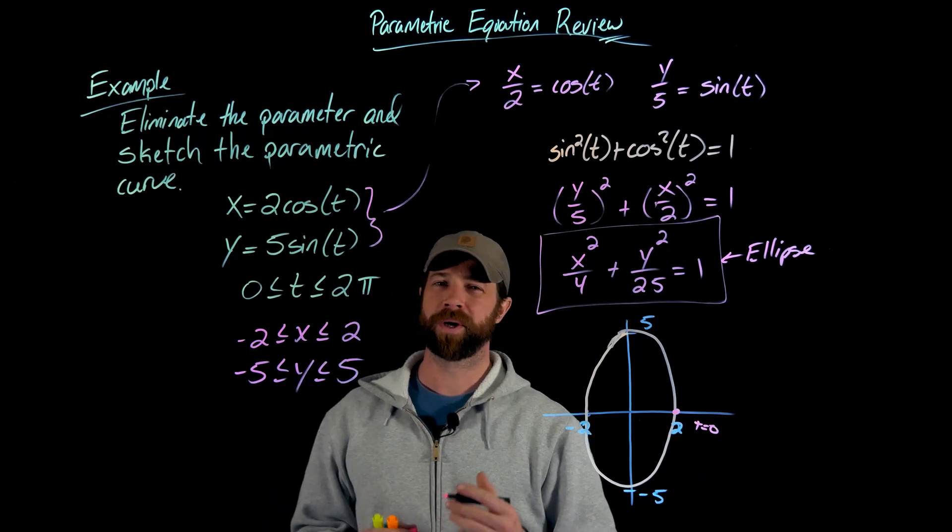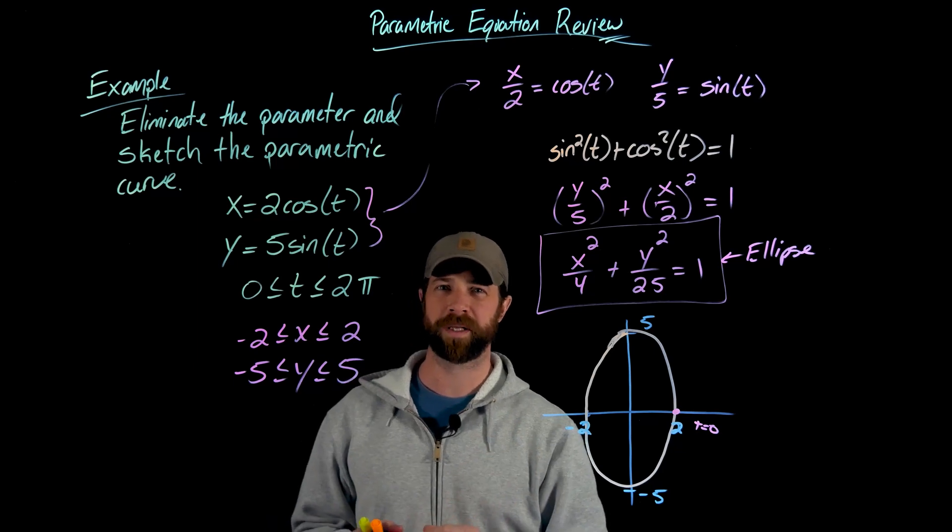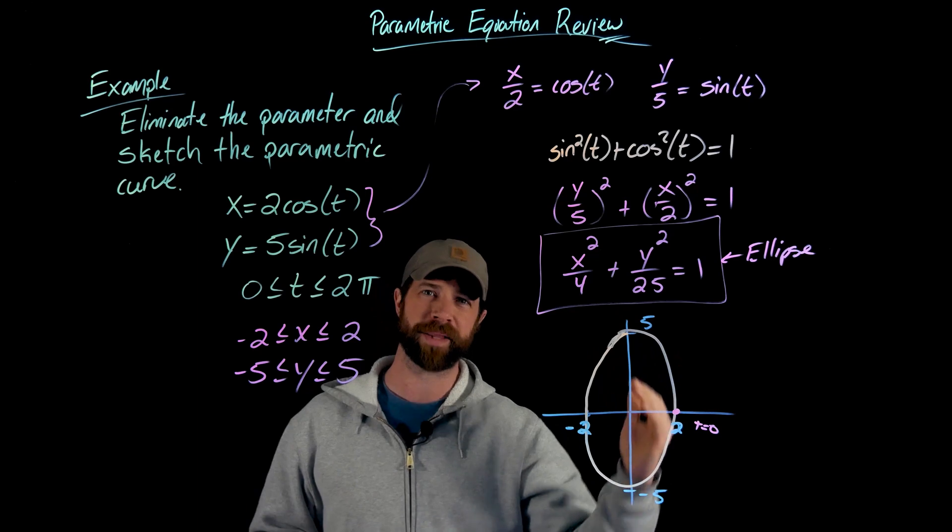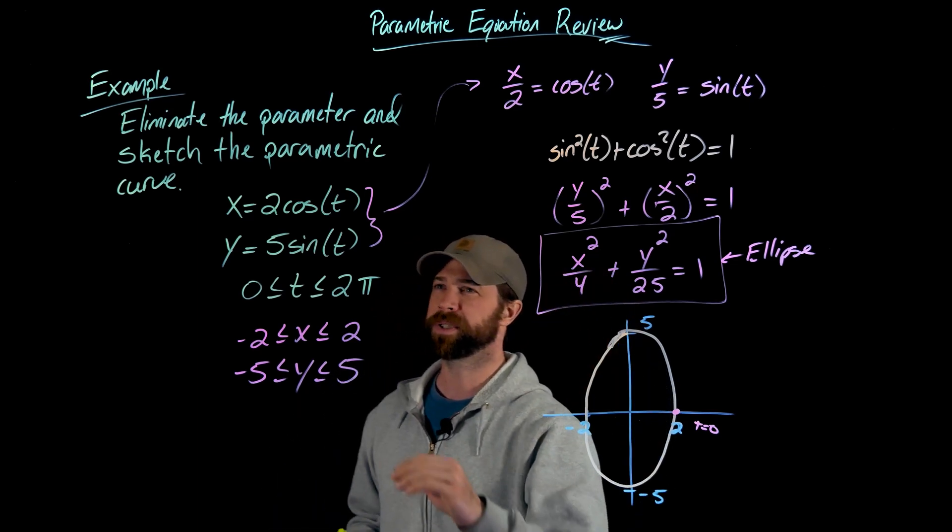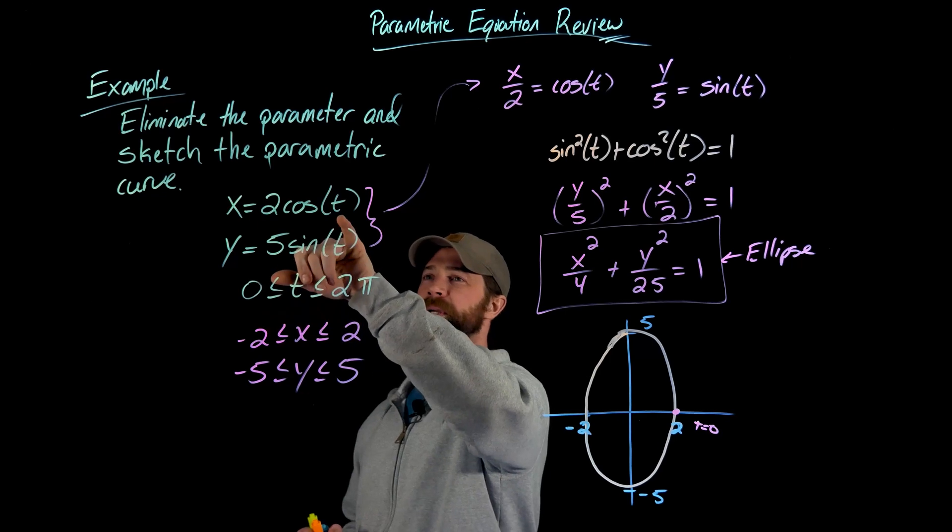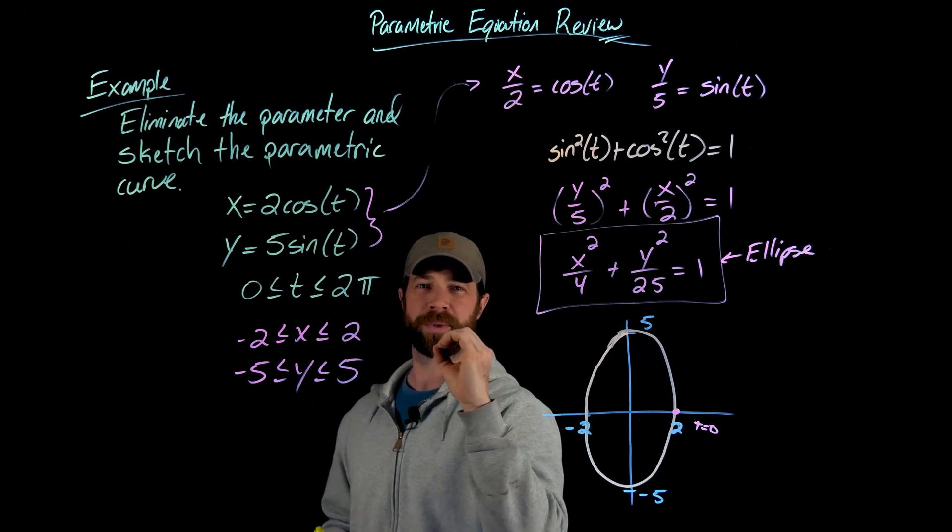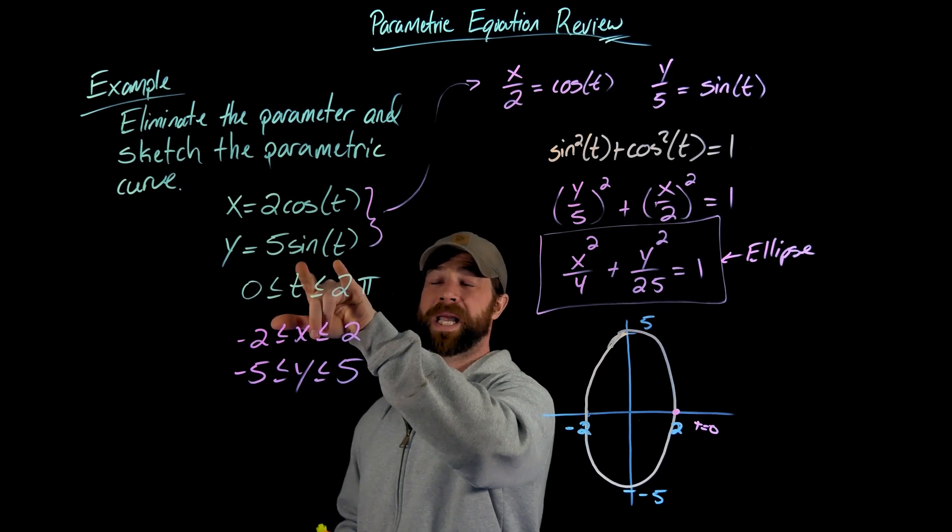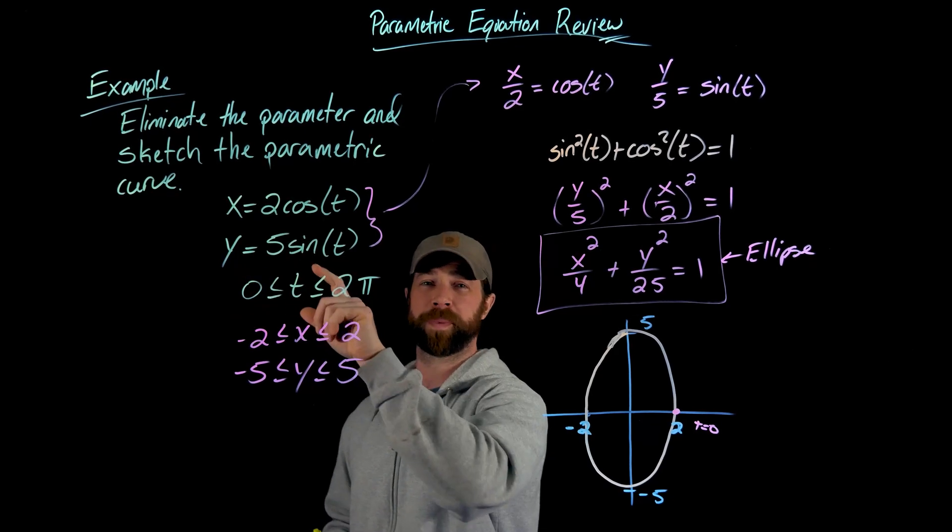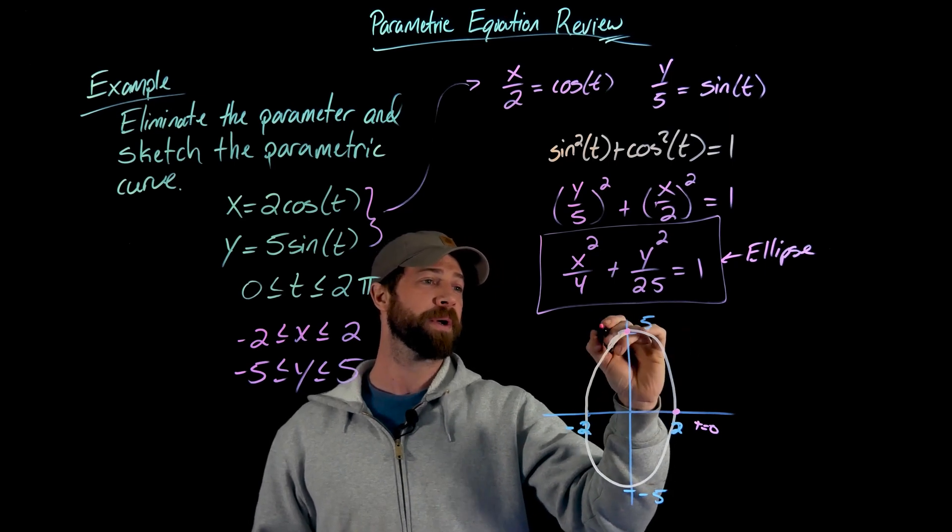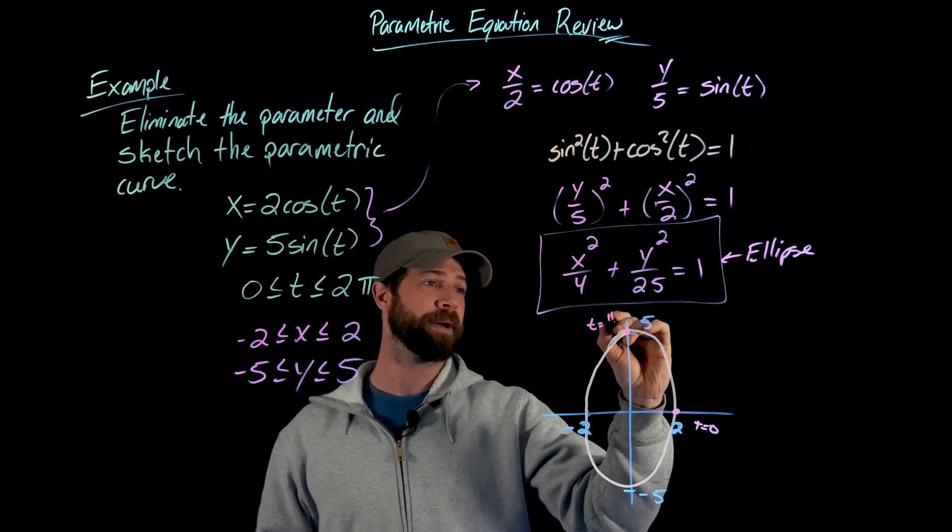I don't need to go through all the values but let's check one more known value. Let's go up to π over two. My intuition is it takes me to this point at the top. At π over two, cosine of π over two is zero so my x value is zero. And at π over two sine is one so my y value is five. So this is the point when t equals π over two.